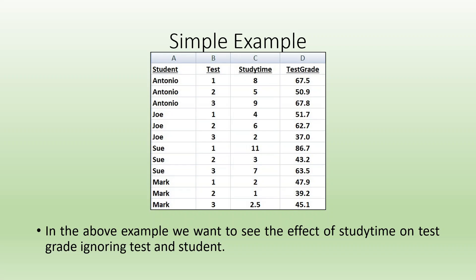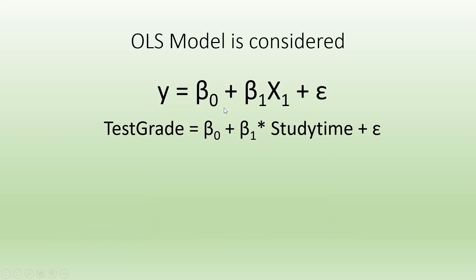Let us take a very simple example. I want to see the effect of study time on the test grade, ignoring the intelligence of the student and the test which has been conducted. When running this type of model it is known as a normal OLS: Y is equal to beta 0 plus beta 1 x1 plus epsilon. So test grade is completely dependent on study time.